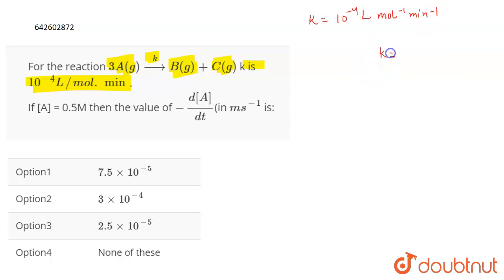Now, the units of K can be governed by concentration to the power 1 minus n, time to the power minus 1. This is the general unit for K, and n represents the order of the reaction. So if n is equal to 2, the units of rate constant becomes concentration to the power 1 minus 2, time to the power minus 1.